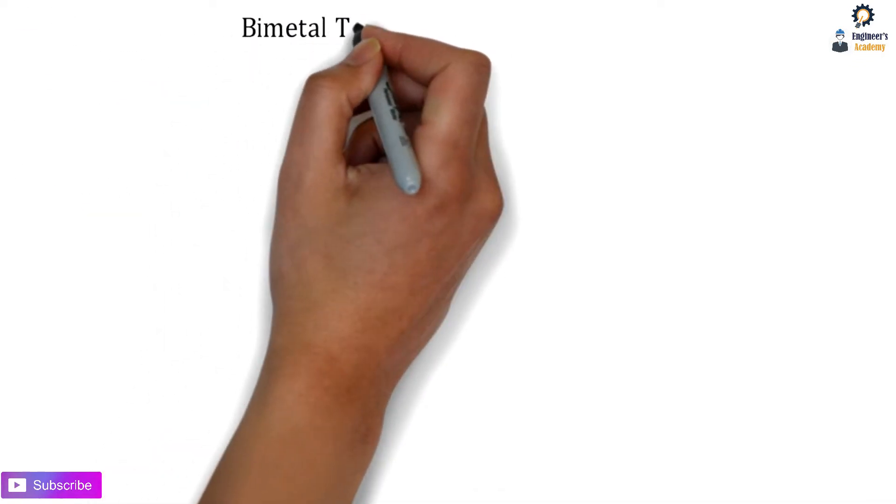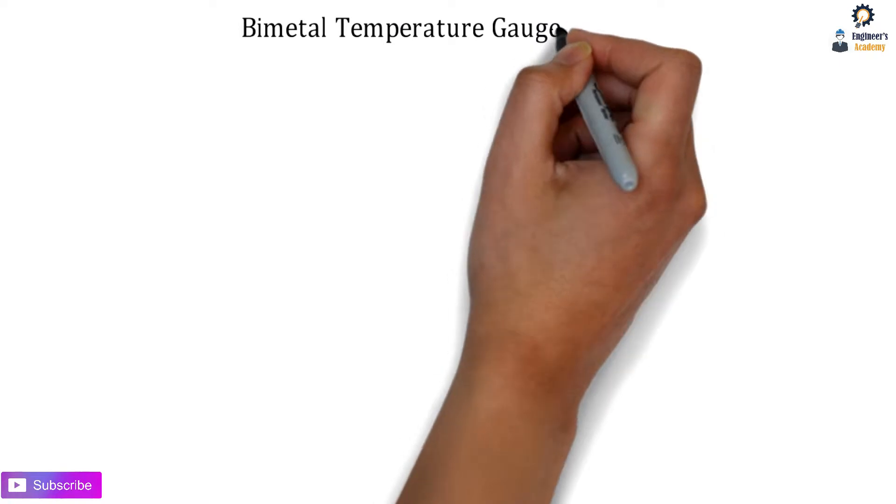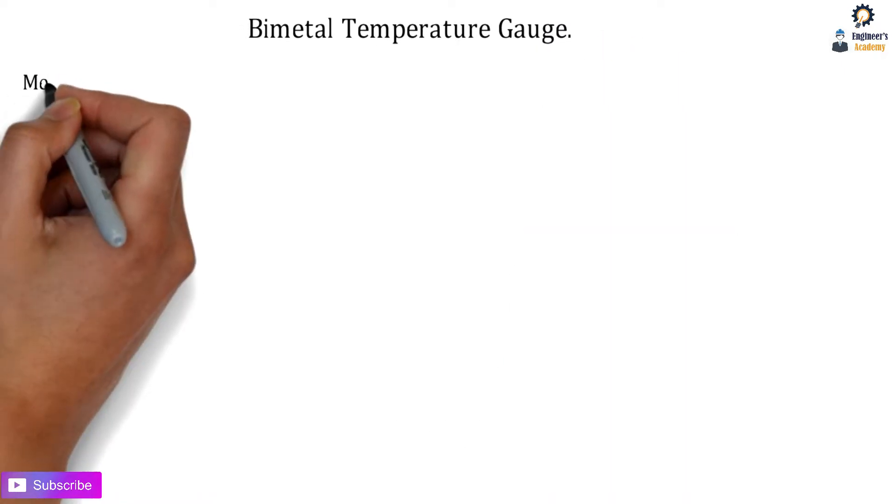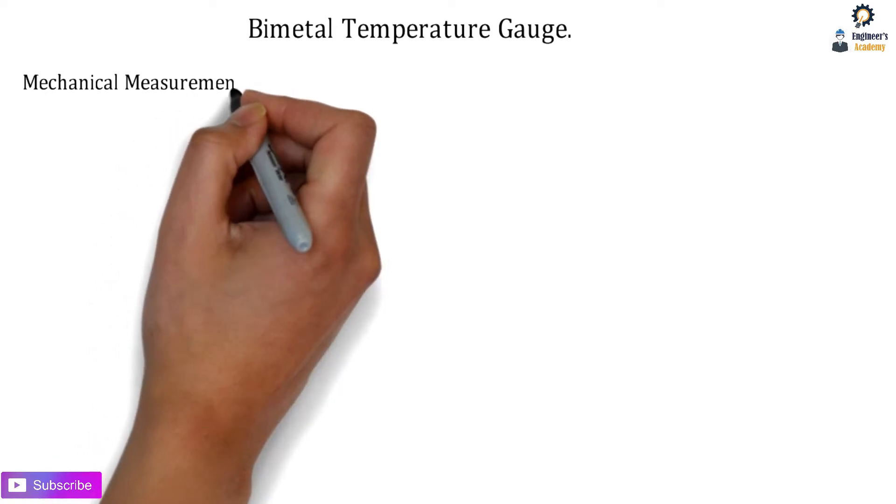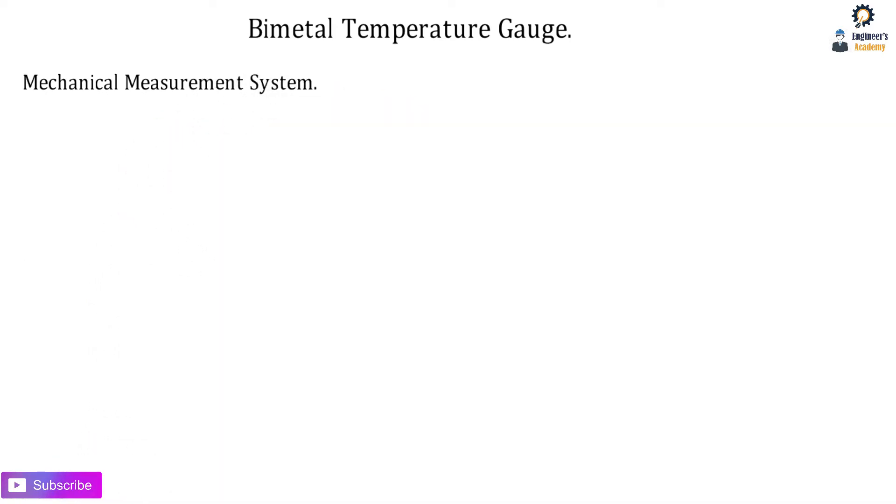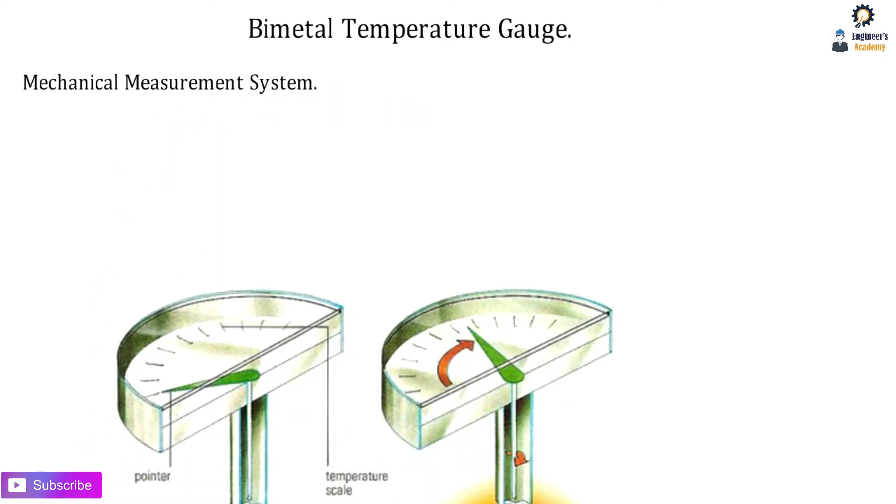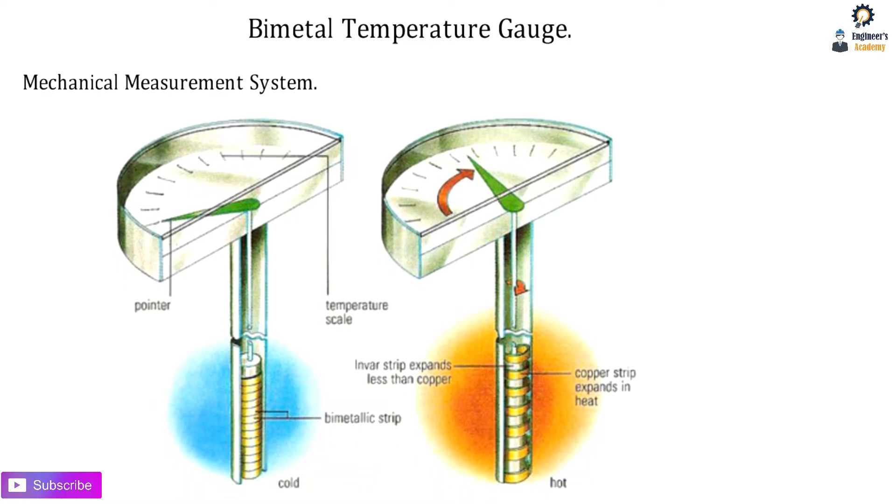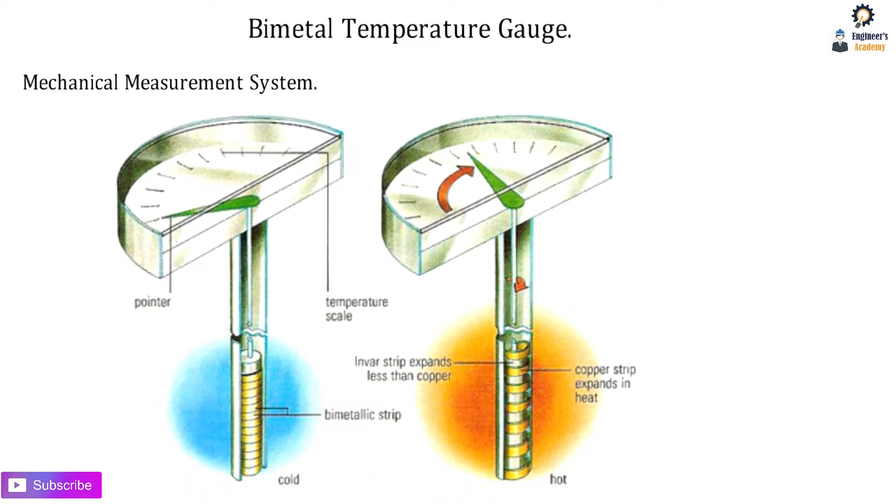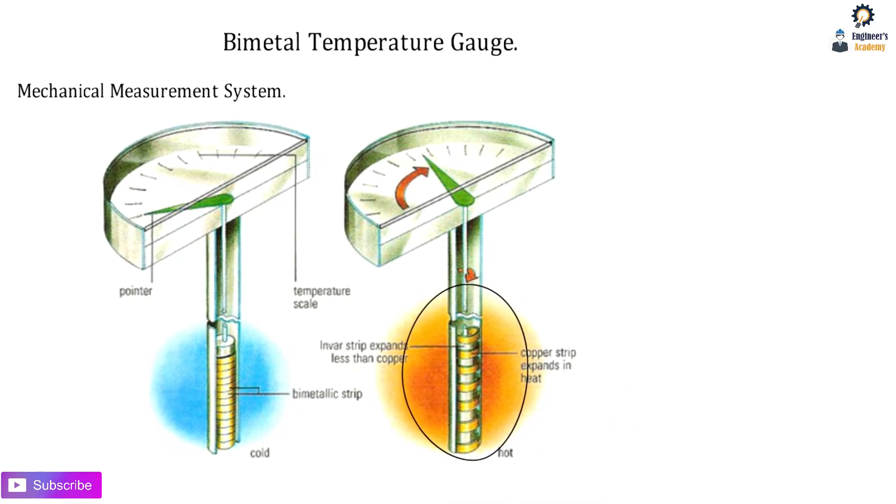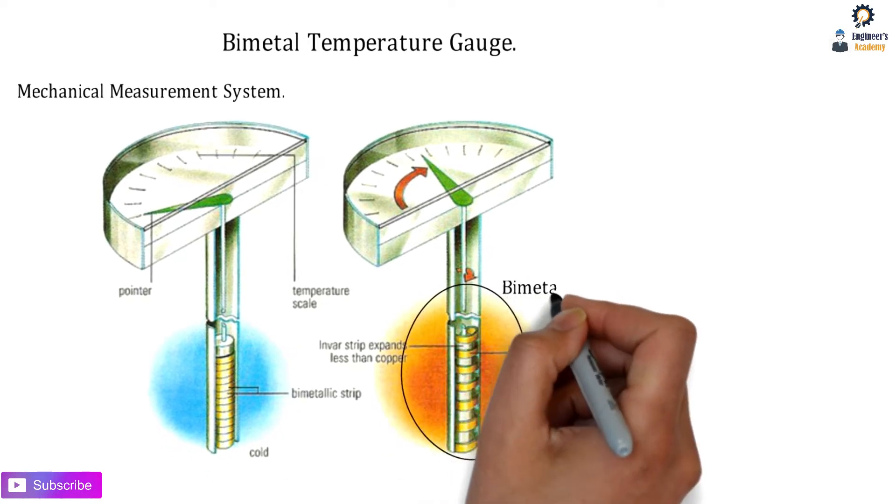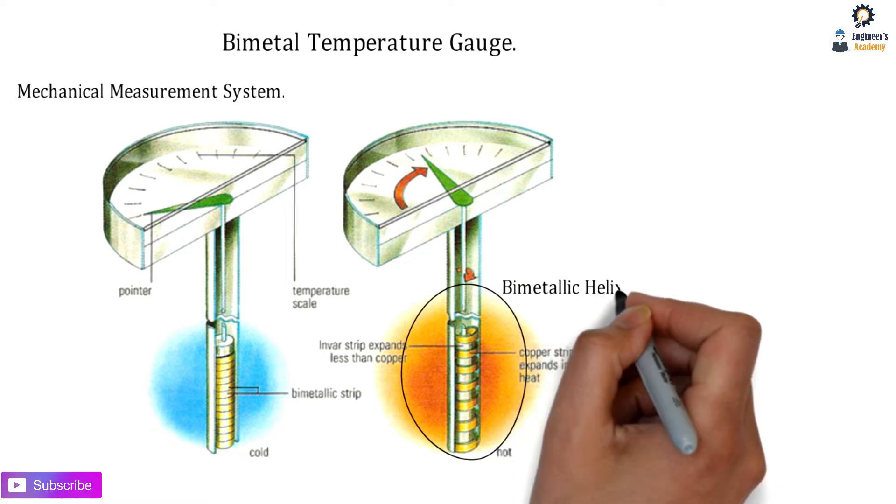Let's begin with today's topic: how bimetallic thermometers work. It's also known as a bimetallic temperature gauge. It's a mechanical measurement system that uses a bimetallic strip in the form of a helix to measure temperature.